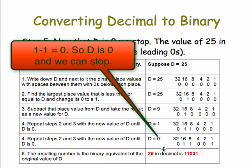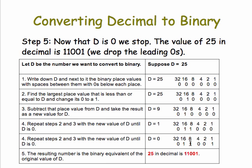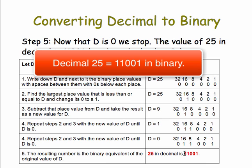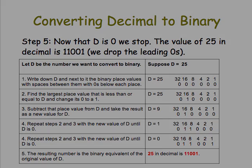The resulting number we get — 0, 1, 1, 0, 0, 1 — gives us the value of 25 in binary. So decimal 25 in binary is 11001. That wasn't too bad.